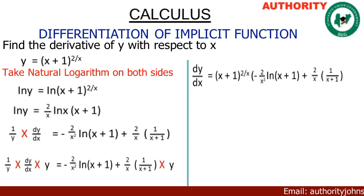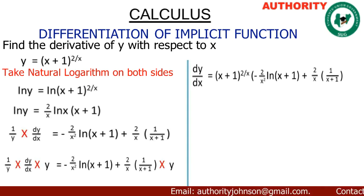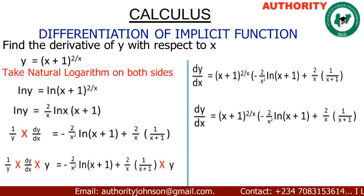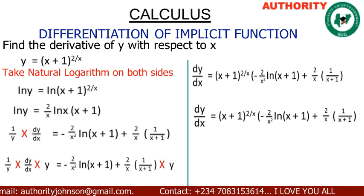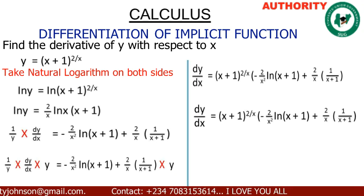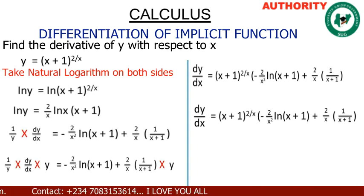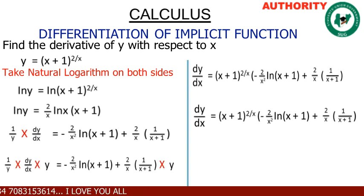From the beginning, our function was y = (x+1)^(2/x), so we replace y with that value. Therefore: dy/dx = (x+1)^(2/x) · [−(2/x²)·ln(x+1) + (2/x)·(1/(x+1))].